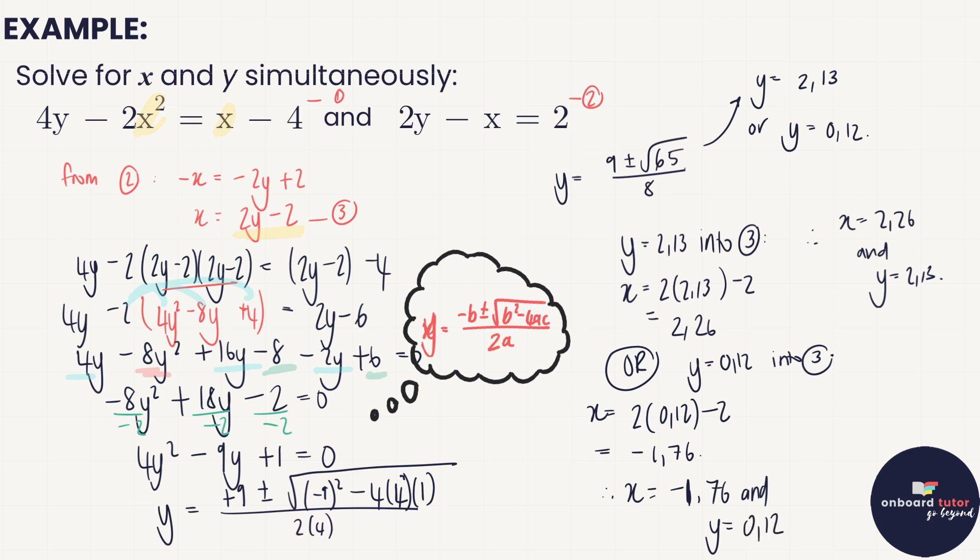So there we have it — that's a typical grade 11 question we can expect to see: a simultaneous equation that involves terms requiring the quadratic formula.